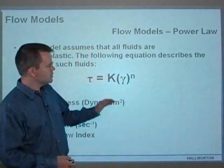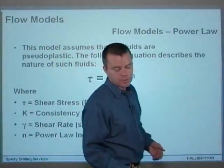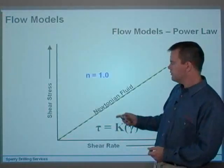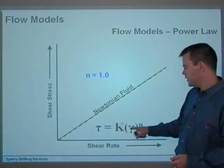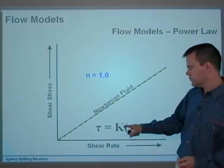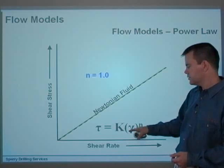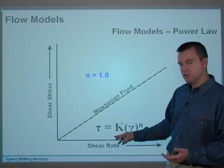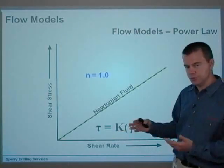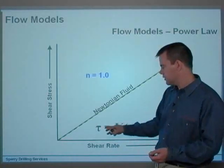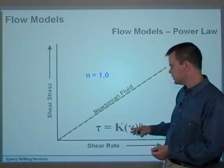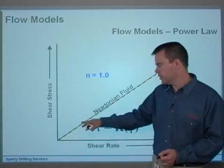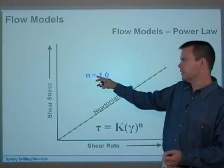And n basically describes the degree of non-Newtonian behaviour. I'll show you what that means on this following graph. If n equals 1, we've got τ = K(γ)^n. So, γ to the power of 1 is just K times γ. So that is basically K would be similar to μ in your Newtonian fluid equation, which is τ = μγ. So it's τ = Kγ because n is 1, giving you a straight line through the origin. So it perfectly describes the Newtonian fluid when n equals 1.